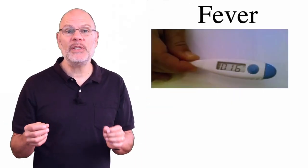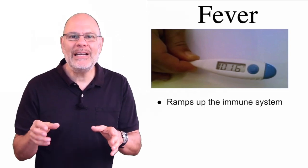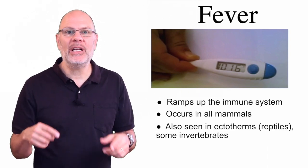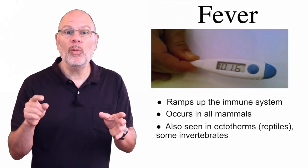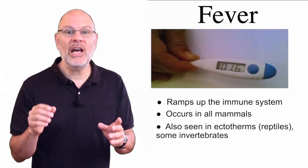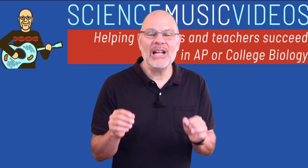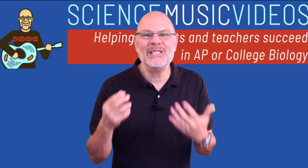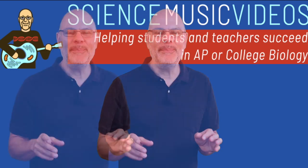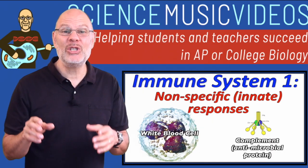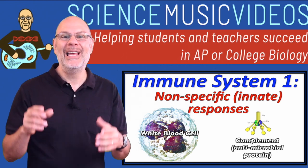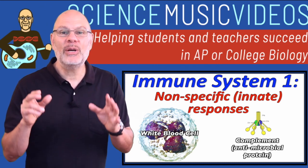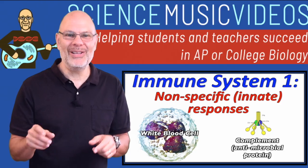Fever is another part of the non-specific immune response. Elevated temperature is thought to ramp up the immune system. All mammals do this, and even our exothermic cousins like reptiles are thought to move into warmer environments like the sun to help them fight off infection. So that's it for the non-specific responses. If you thought this was cool, you'll love the next lesson about the specific responses. I've taken everything you need to know about the non-specific immune system and put it into a song — enjoy it. Please remember to go over to ScienceMusicVideos.com to complete the immune system tutorials.